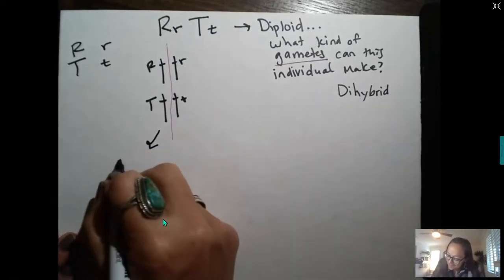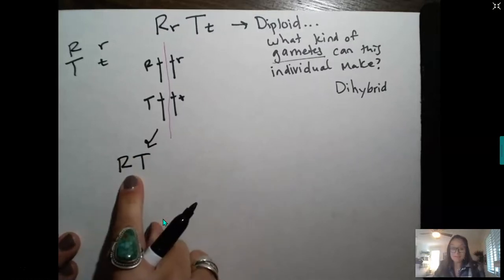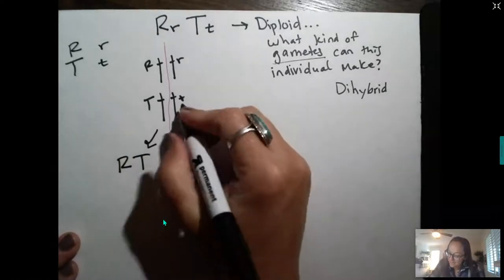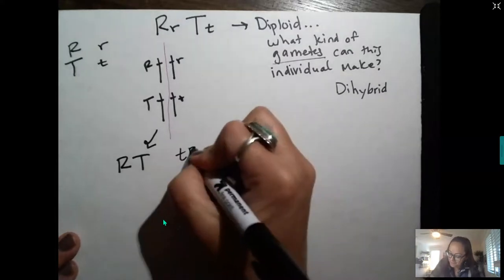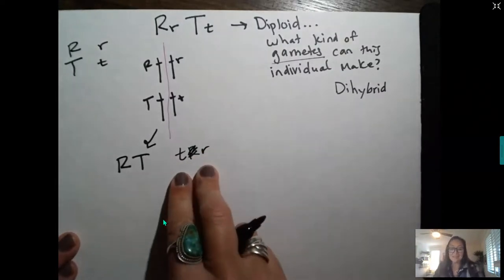we would end up, these gametes over here would have a dominant allele of each kind. And these gametes would have a recessive allele for each one.